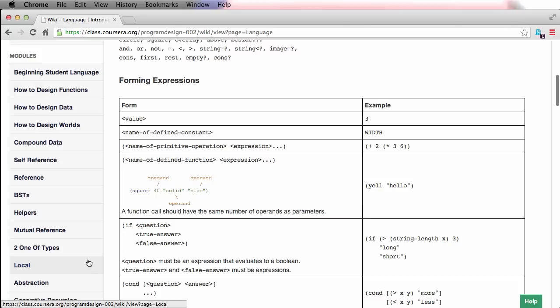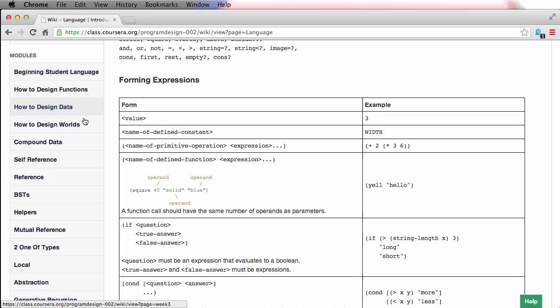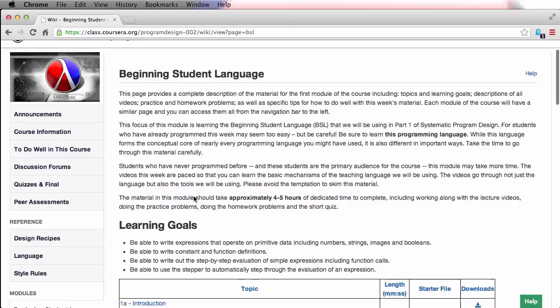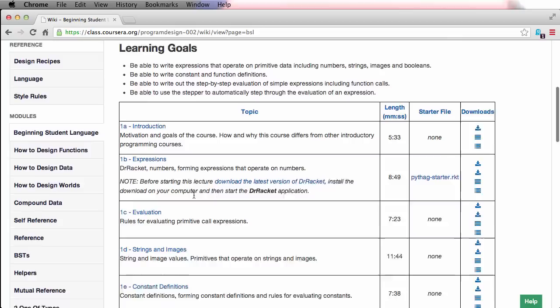So these are reference pages that you'll get quite familiar with as we go. Now here's all of the actual modules of the course. Some of these are about a week long, some of them are a little less than a week long, and they're organized here in the order that we're going to go through them. So if I go to the first module, the beginning student language module, you'll see that each of these pages gives you an overview of that module, talks about the learning goals for the module, and then it has all the video lectures.